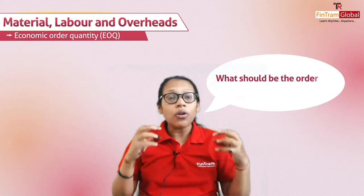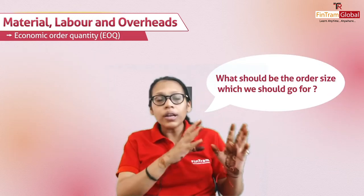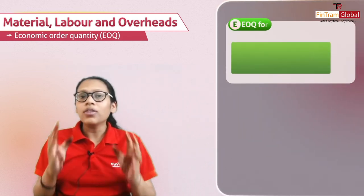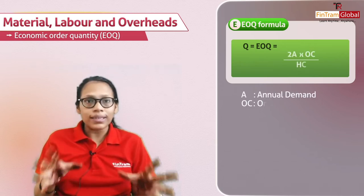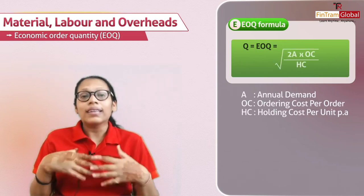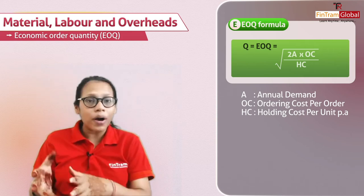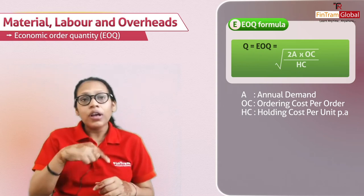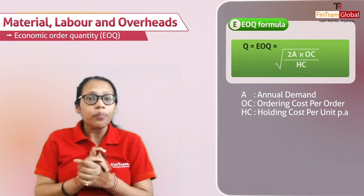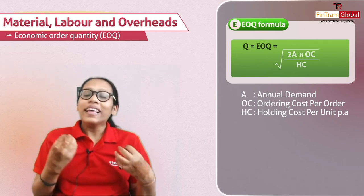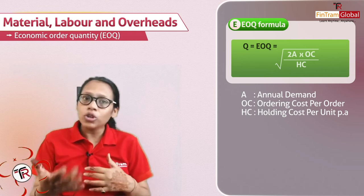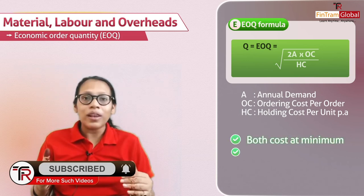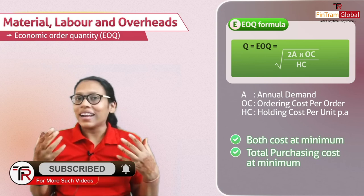So the question arises: what should be the order size so that both of these costs should be at a minimum level? And that we are going to achieve through the formula of EOQ. The formula is very, very simple: it's the square root of 2 into A — that's the annual demand — into the ordering cost per order, divided by the carrying cost or holding cost per unit per annum. That gives you the EOQ — the order size you should place so that you can keep both costs at a minimum level, and hence keep the total purchase cost at a minimum level.